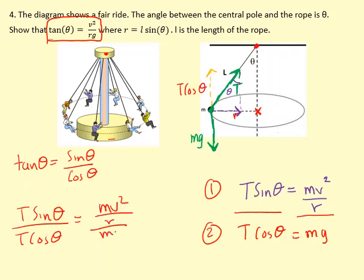The T's cancel out and that becomes tan theta. The m's cancel out and we get v² over rg. This will help us figure out the theta if we're given the velocity, radius, and gravitational field strength. Once we've got the theta, we can put it back into one of these equations, one or two, to find tension.